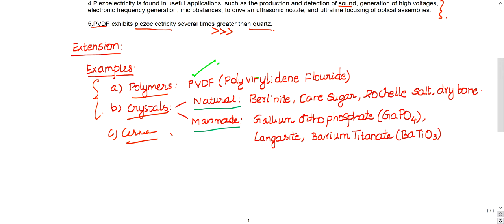Coming to crystals, there are two kinds: natural and man-made. Natural crystals include berlinite, cane sugar, Rochelle salt - many exams use this Rochelle salt as an option - and also dry bone. Rochelle salt and dry bone are very important. PVDF and these two are very important in competitive exams.